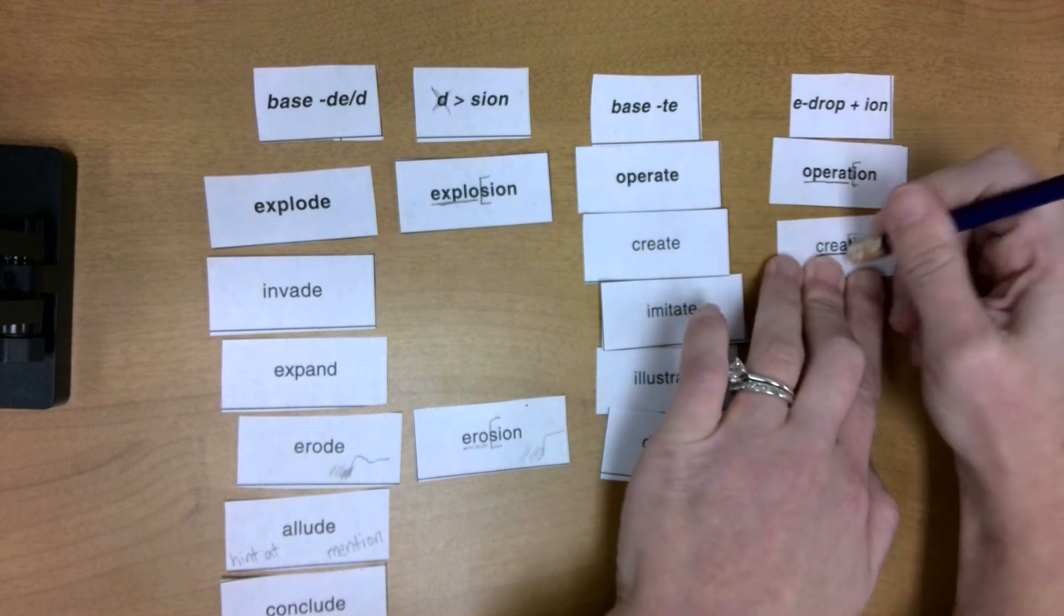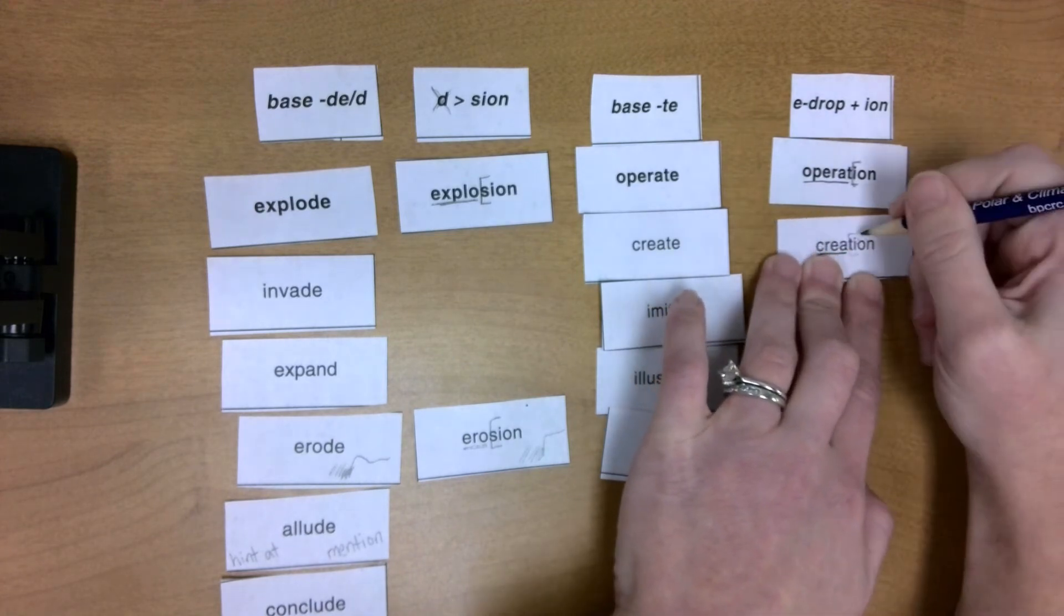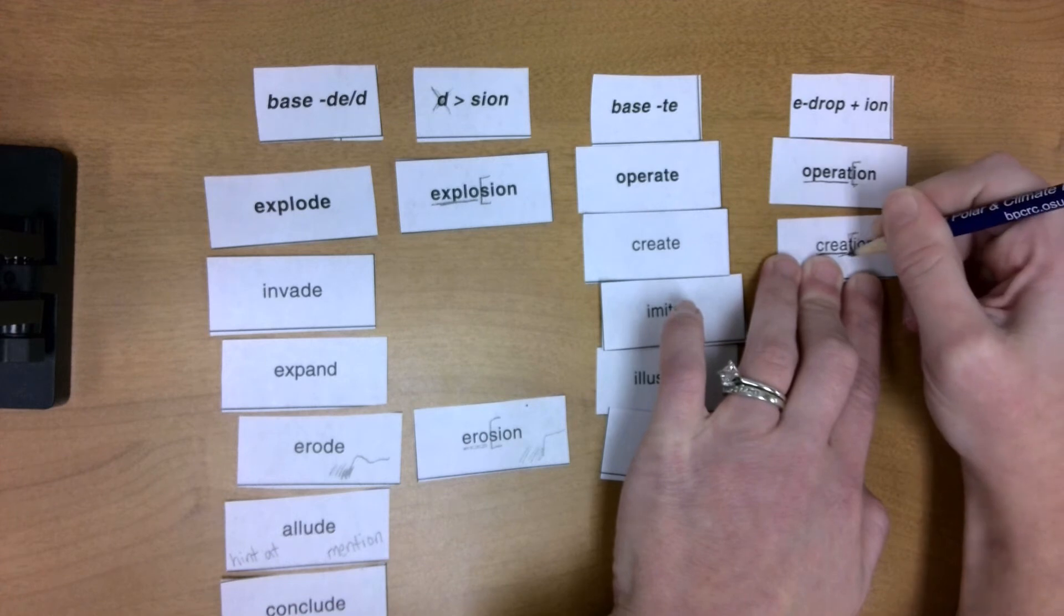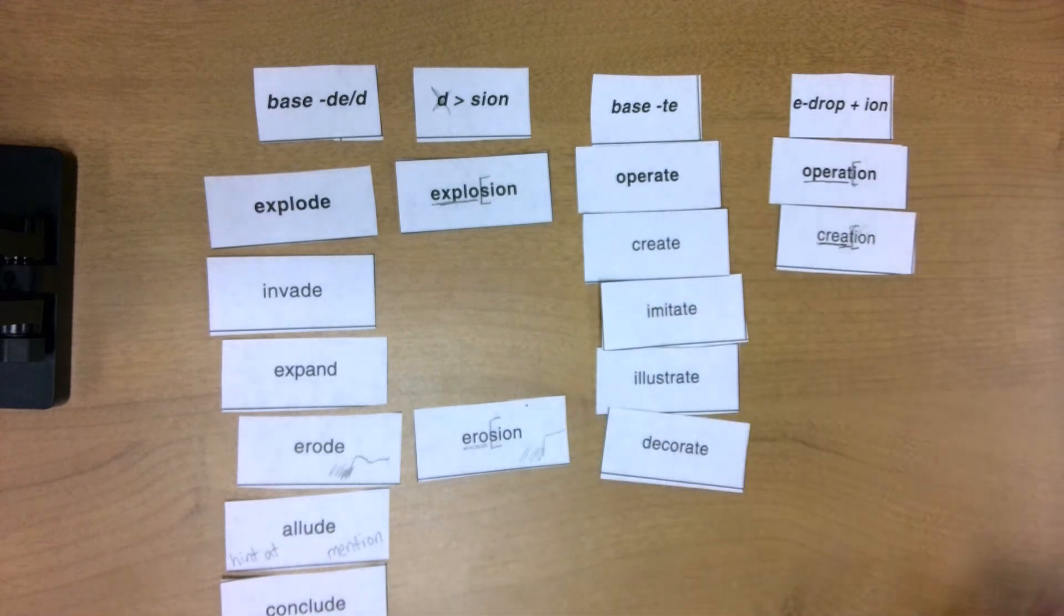I'm not going to get that T, right? Create. Where I had an E drop before making it creation.